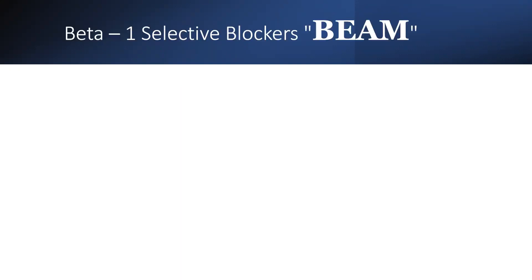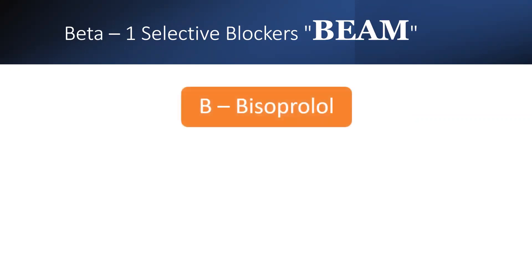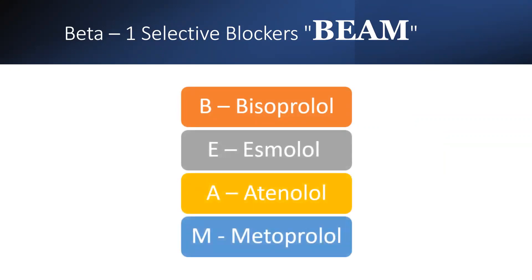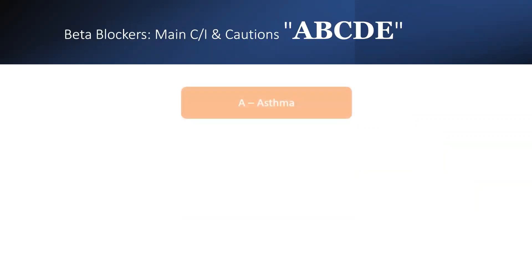Beta-1 selective blockers can be remembered with the mnemonic BEAM: B as bisoprolol, E as esmolol, A as atenolol, and M as metoprolol.